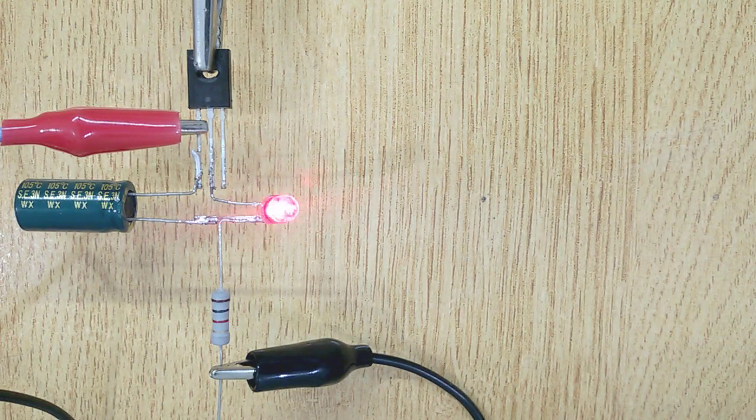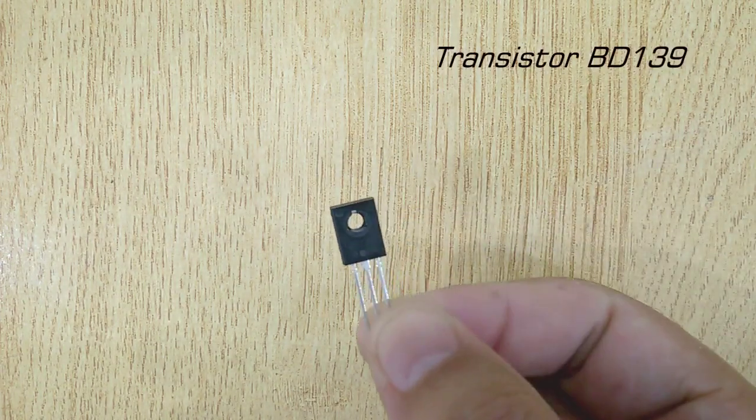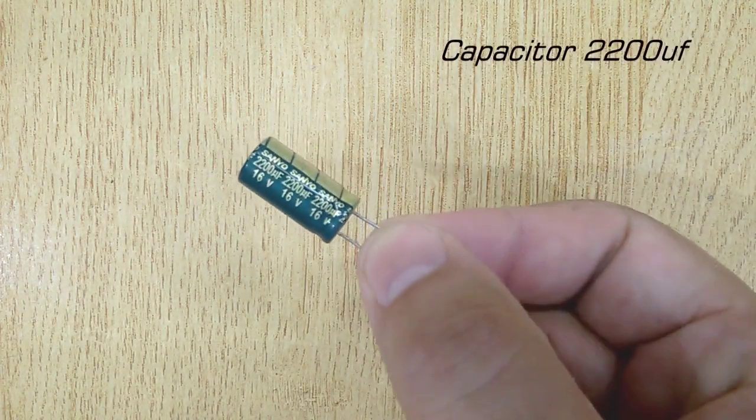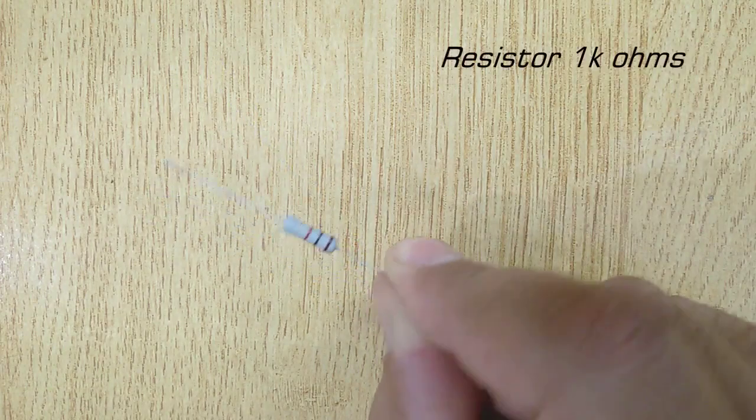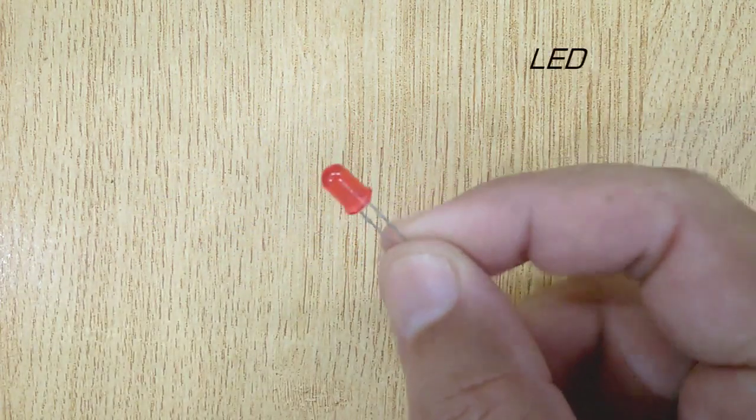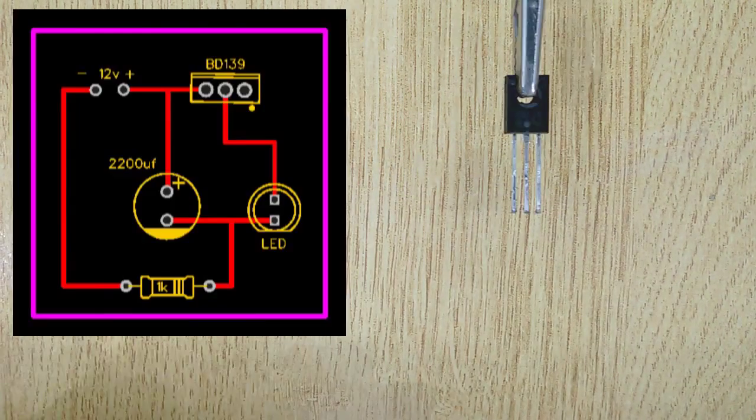To complete this circuit, you will need Transistor BD139, Capacitor 2200UF, 1K Ohm resistor, and LED.